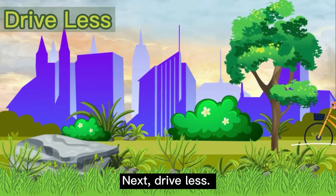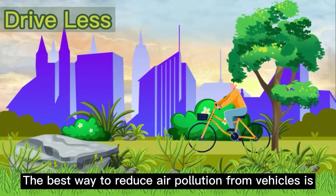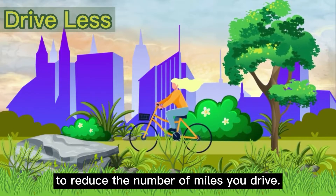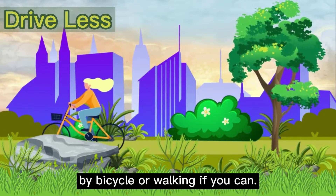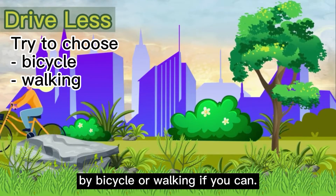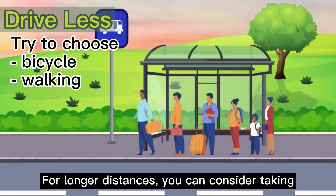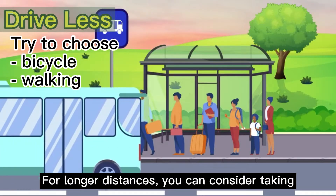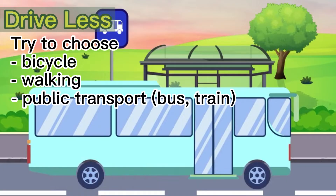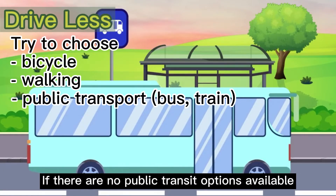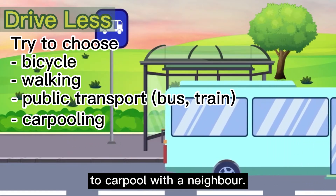Next, drive less. The best way to reduce air pollution from vehicles is to reduce the number of miles you drive. You can try to reach your destination by bicycle or walking if you can, as this will avoid producing any pollutants. For longer distances, you can consider taking public transport such as a bus or train. If there are no public transit options available where you live, you might choose to carpool with a neighbor.